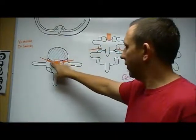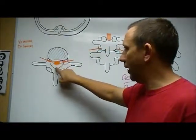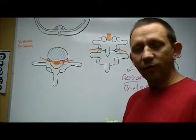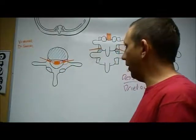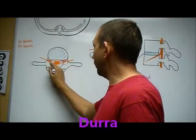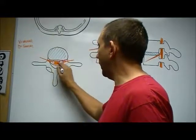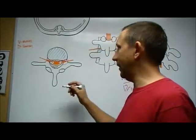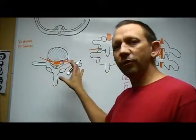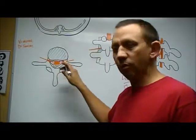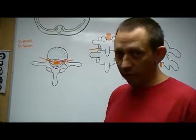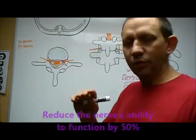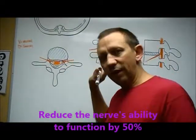The spinal cord runs through the vertebral canal — the central canal that goes all the way down. It doesn't really float around in there; there's a covering around it called the dura, and around that is fat and other connective tissue. If those get misplaced or injured, they can swell up and put pressure on that nerve. Even pressure the size of a dime can reduce the nerve's ability to function by 50%.